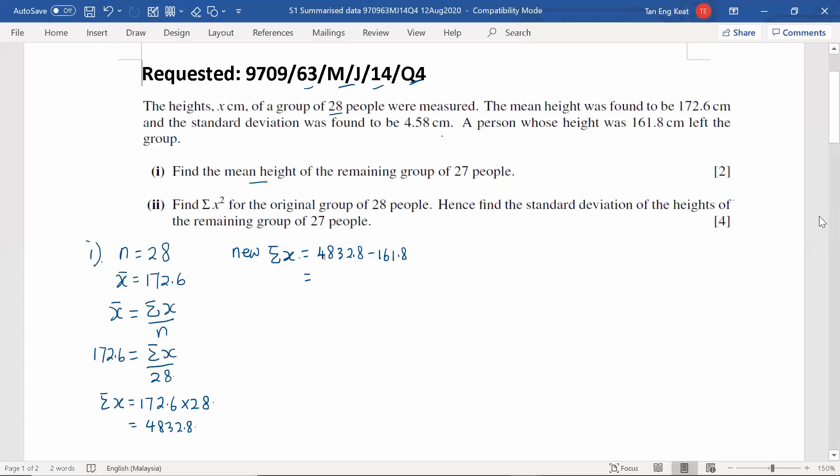So the value we calculate: 4671. And hence we can find out the new mean for the remaining 27 people. So the total height of 27 people divided by 27 people will give you the mean height. Calculate out the value 173. So that is the answer for part one.